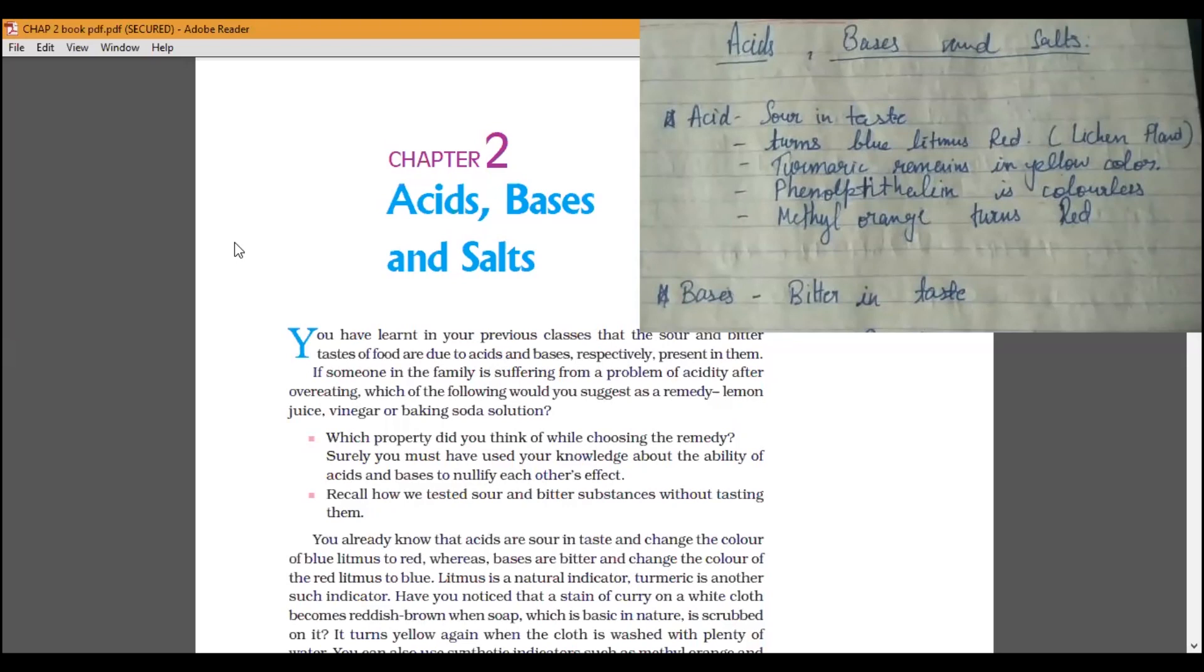Then, Turmeric. Turmeric is yellow. If we add it in the Acid, it will be yellow. So, these are indicators that tell us that there is a substance of Acid or Basis. In this chapter, we will discuss four indicators: Litmus paper, Turmeric, Phenophthalene and Methyl Orange. So, how do we behave in Acid and Basis? We have mentioned in notes.